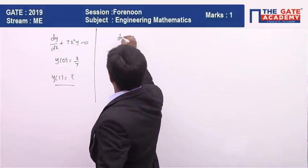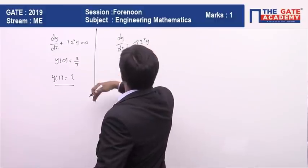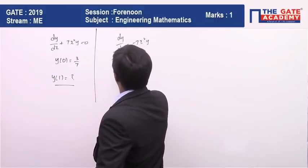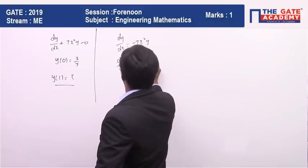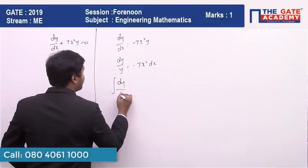It's going to be -7x² dx. Integrating on both sides, dy/y is going to be equal to the integral of -7x² dx.